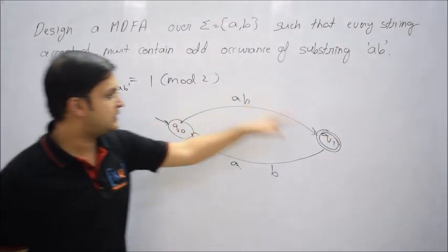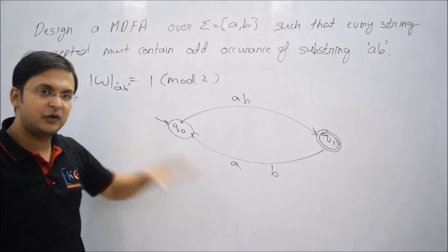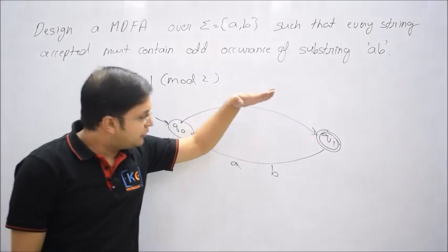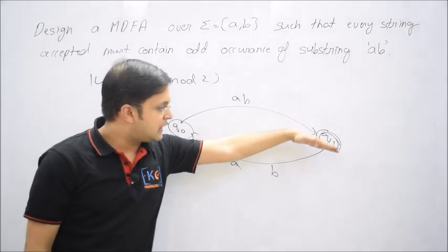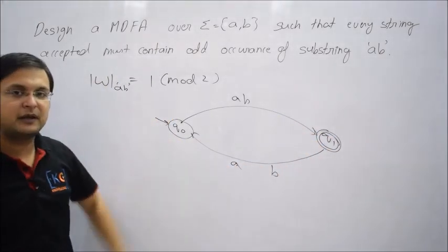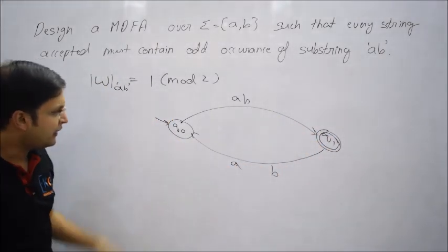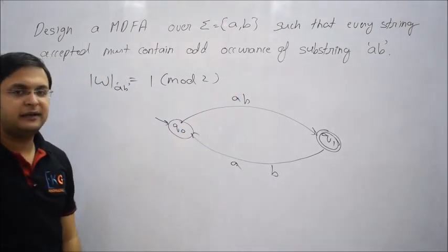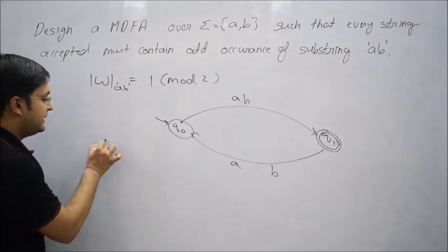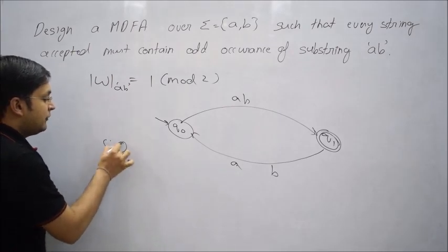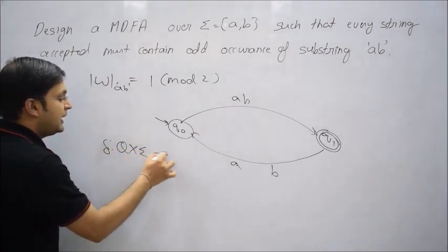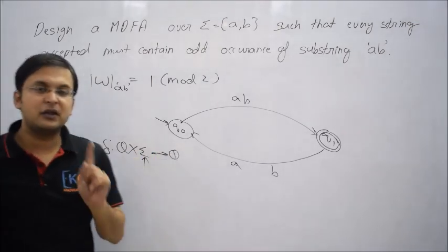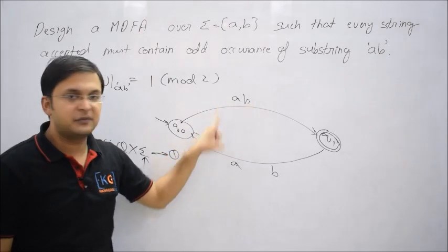Let me make q1 as a final state. So now this is acceptable, this is unacceptable. But I cannot have this structure because in a DFA, the transition function delta goes from q cross sigma to q. At any instance, you can only make a transition of one symbol, but that is a substring.